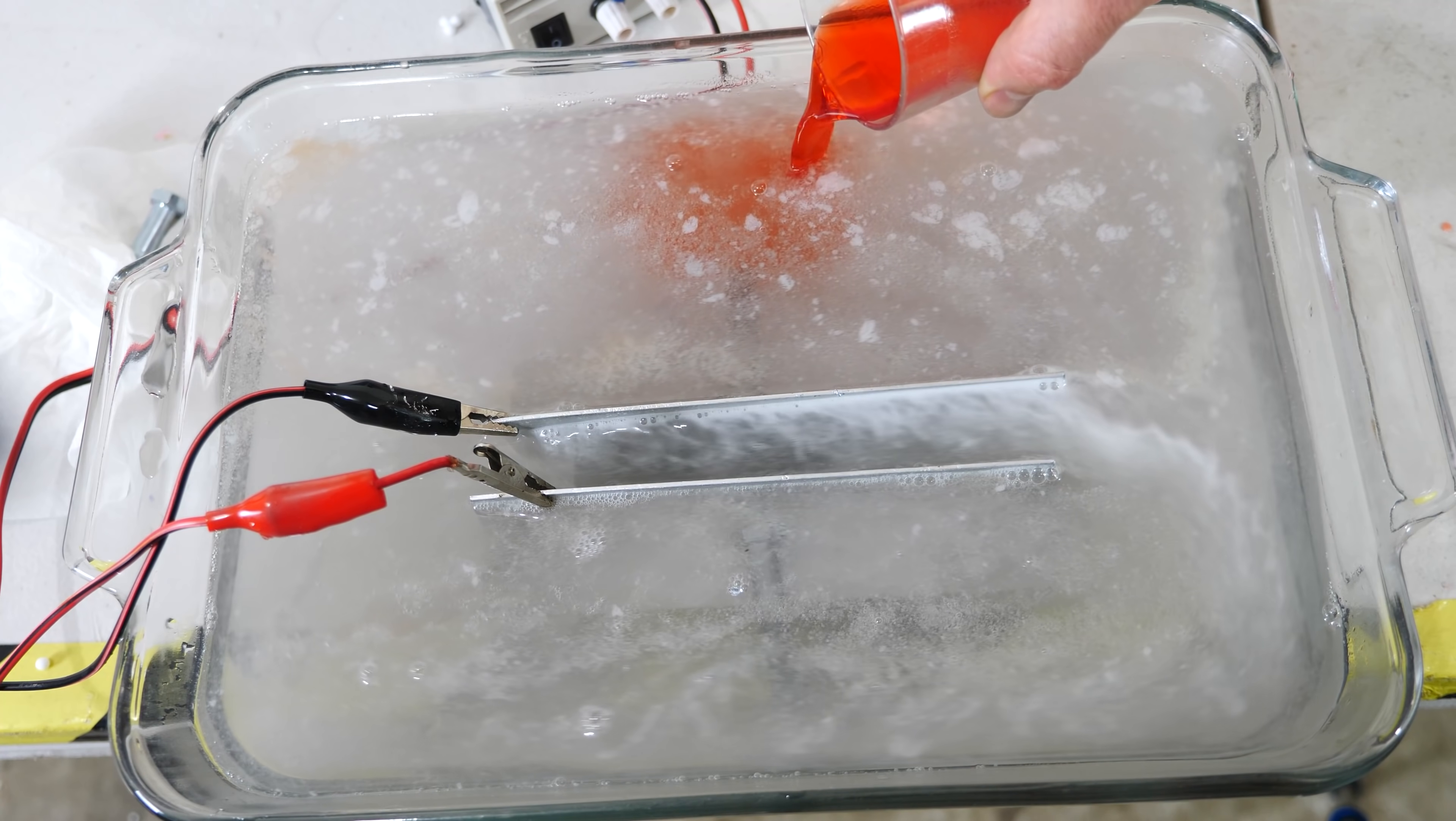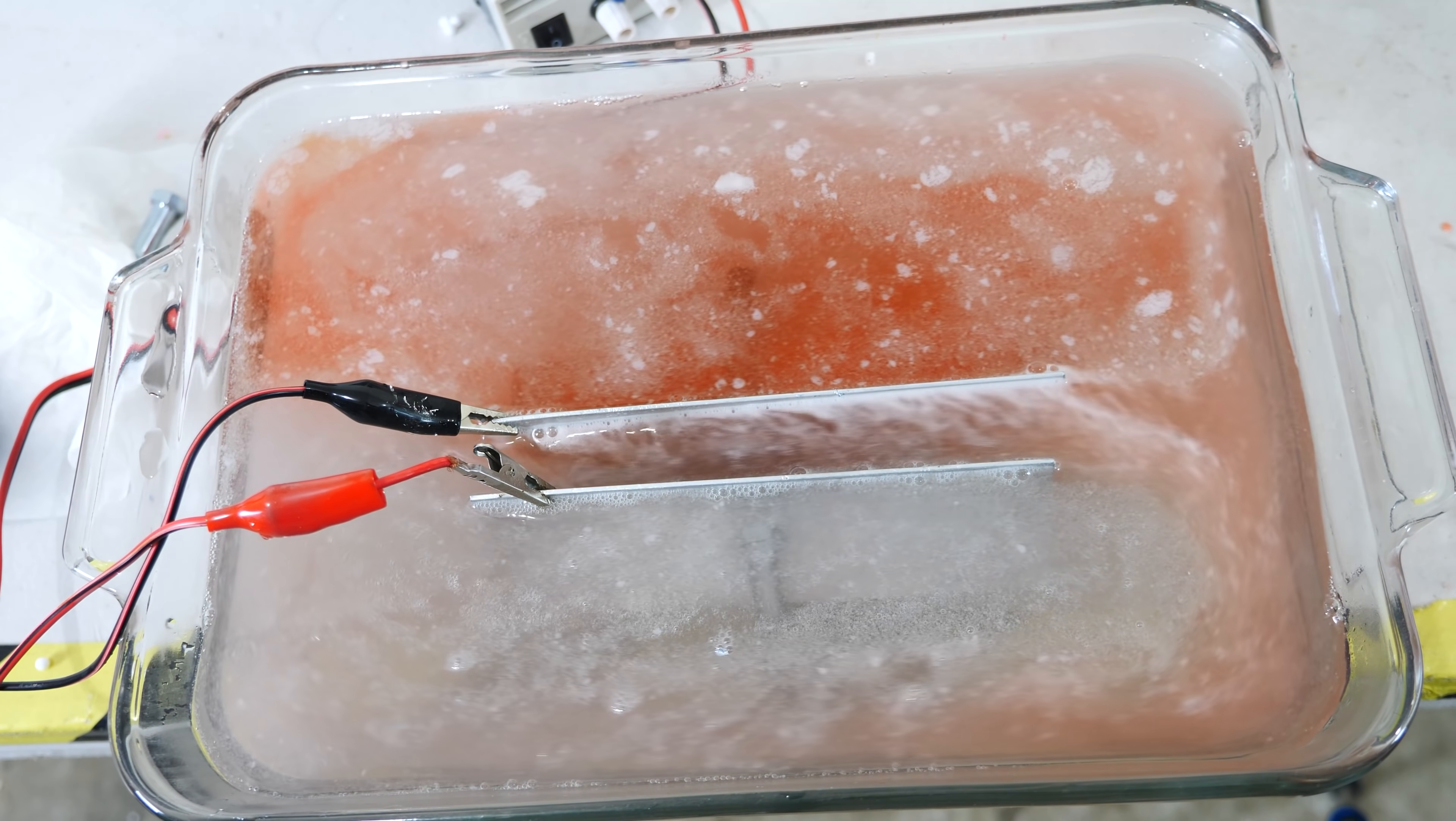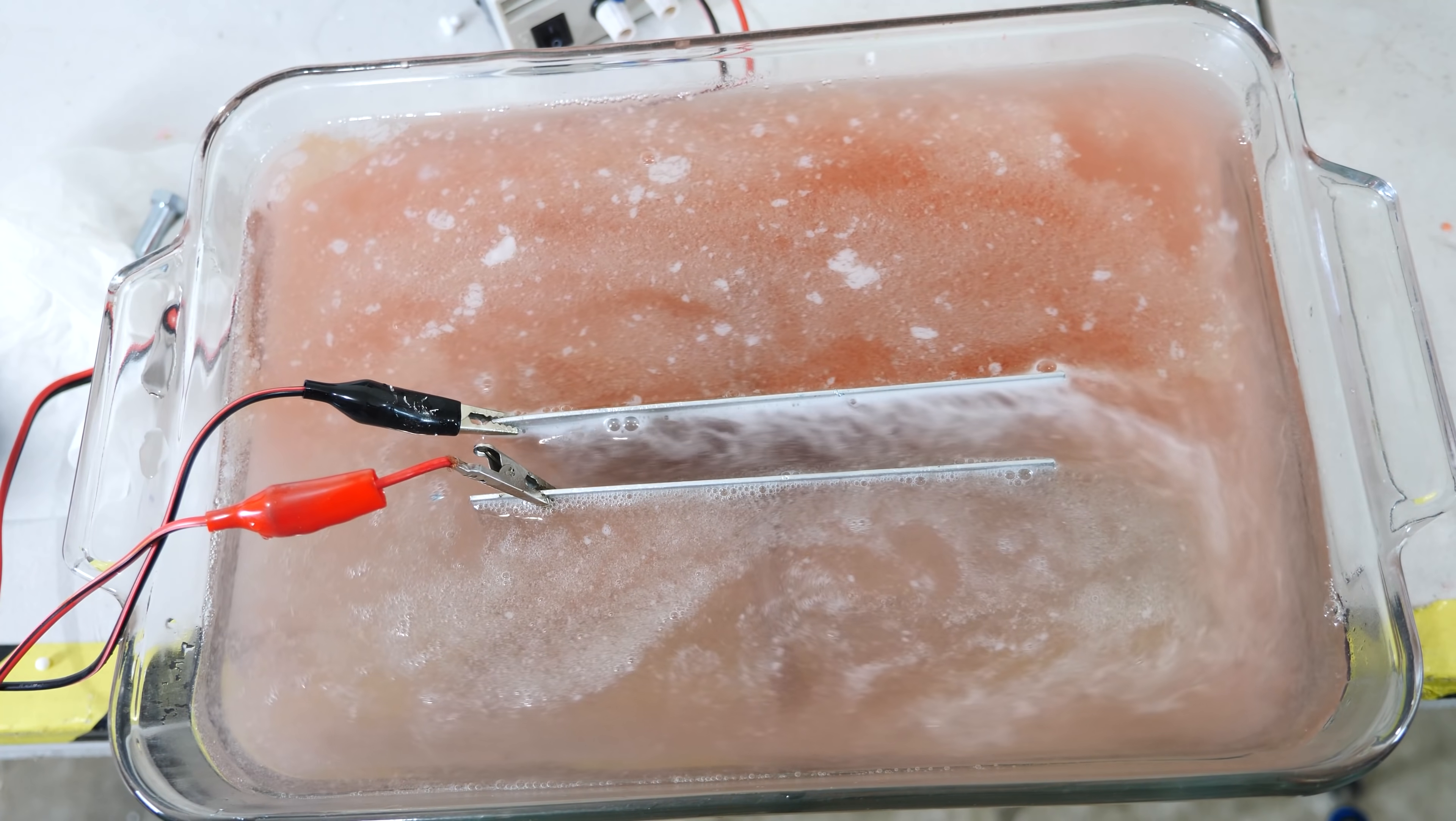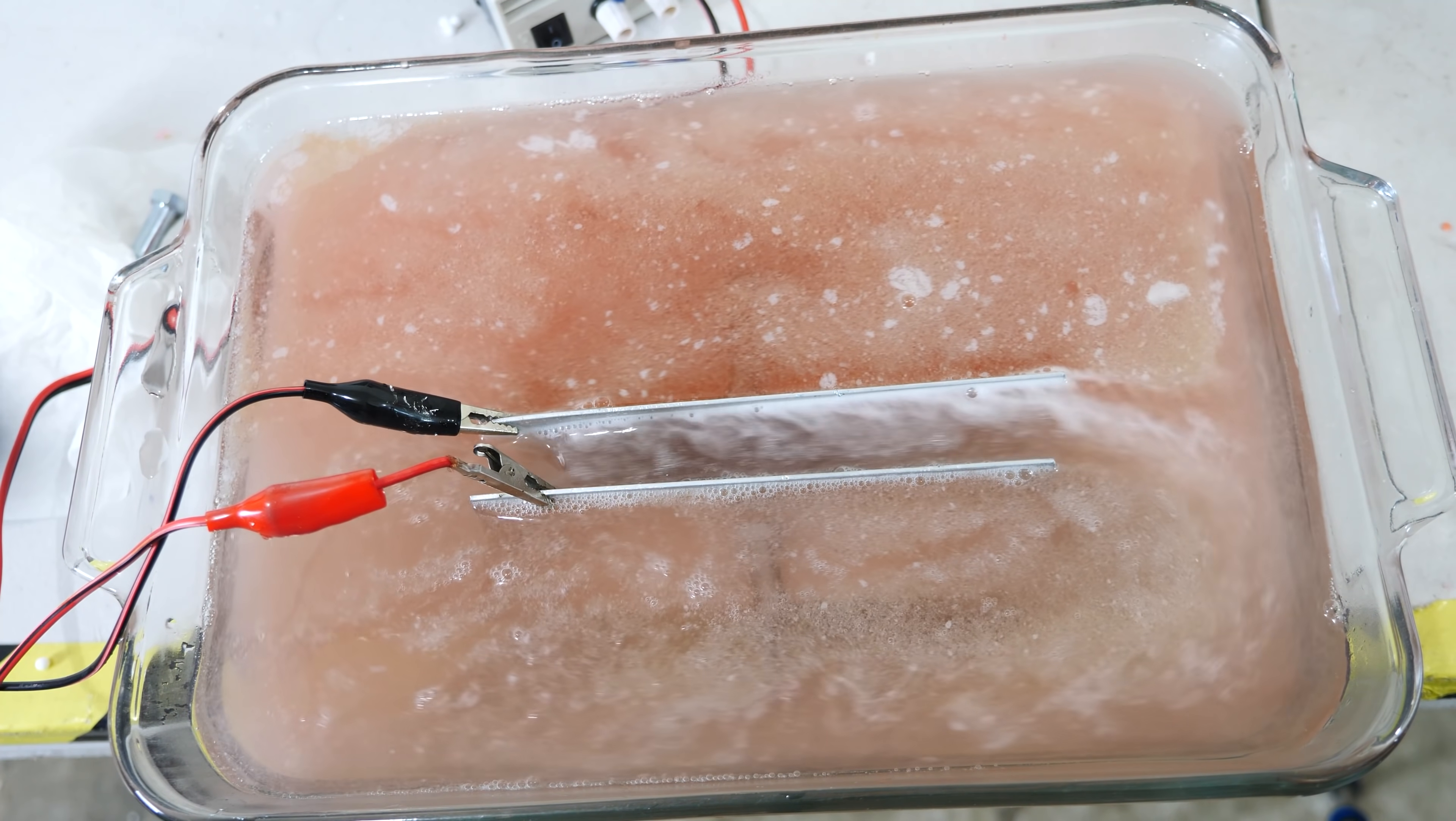Although we are getting the water to move, it's not moving the water very efficiently. You can see that a lot of energy is lost into making these bubbles on the electrodes. These are actually bubbles of hydrogen and oxygen forming here. And actually because we have a chloride ion in the water, it's making chlorine gas as well.